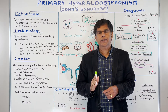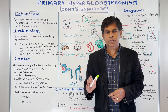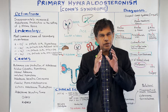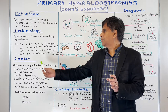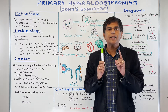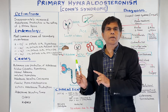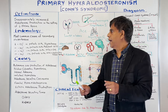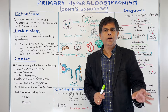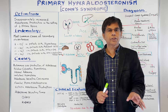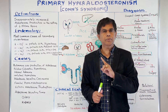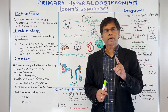Epidemiology is very important. Primary hyperaldosteronism is the most common cause of secondary hypertension. Up to 13% of people with hypertension could have primary hyperaldosteronism — if you take 100 people with high blood pressure, 13 of them could have Conn's syndrome. In patients with resistant hypertension — where you give three or four drugs and blood pressure remains high — that number goes up to 11 to 30%.